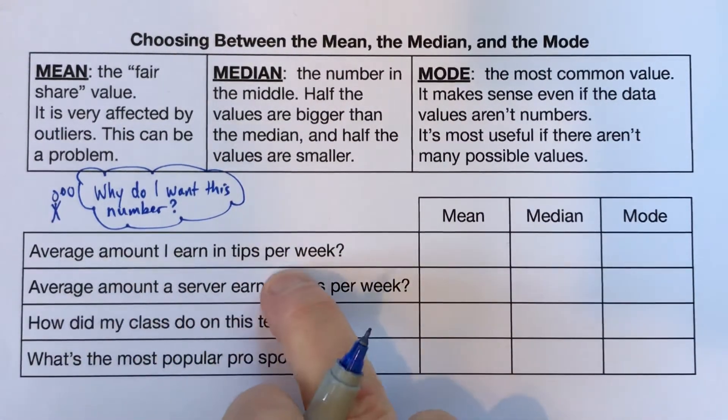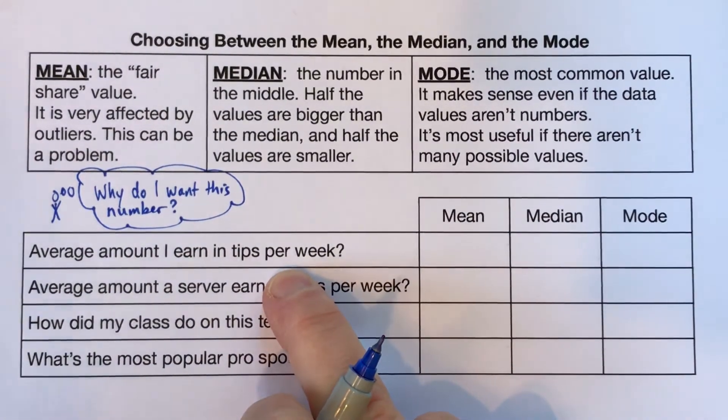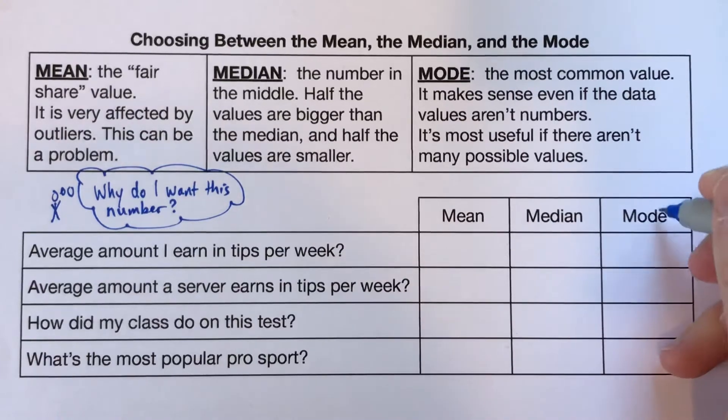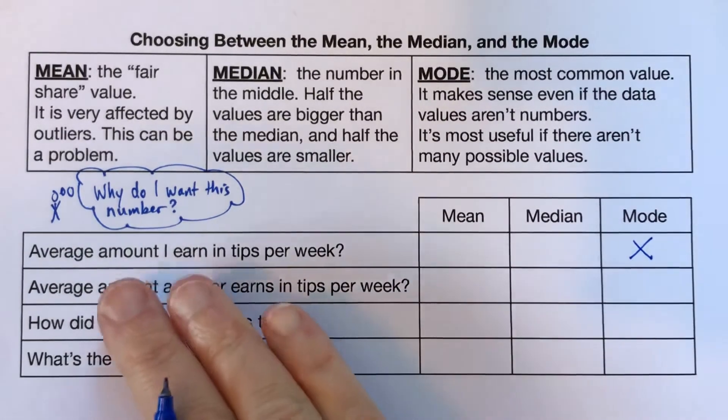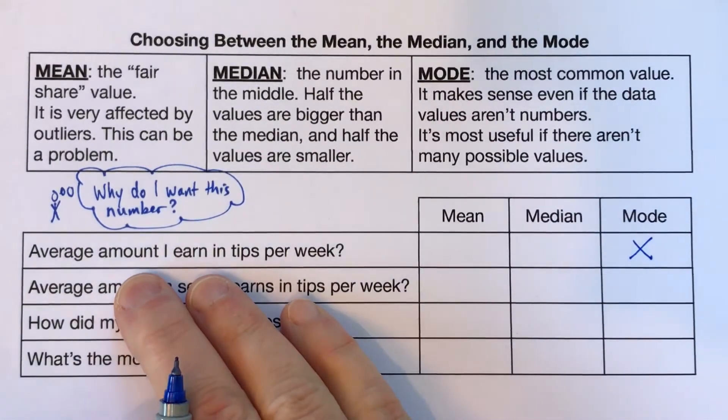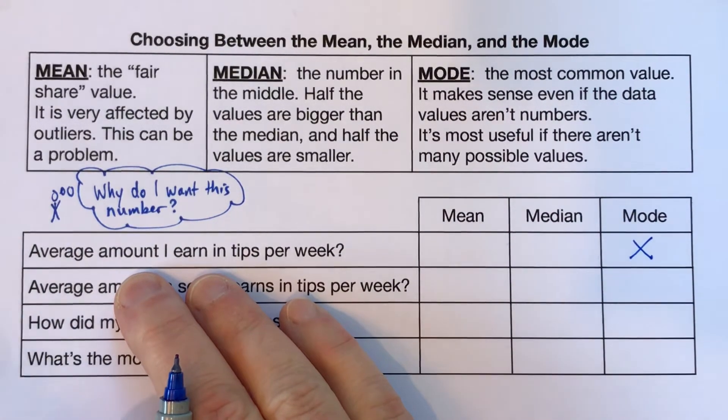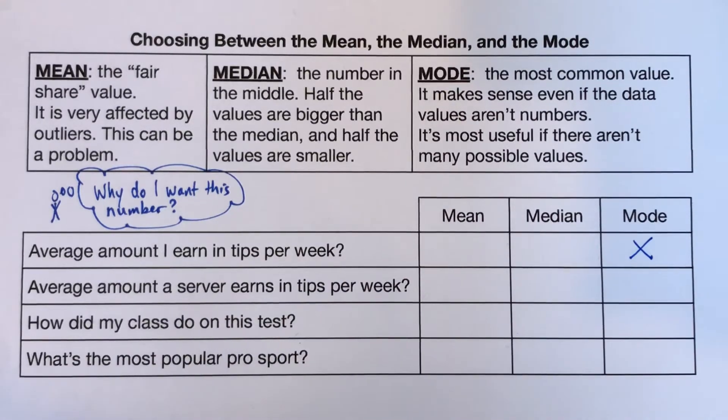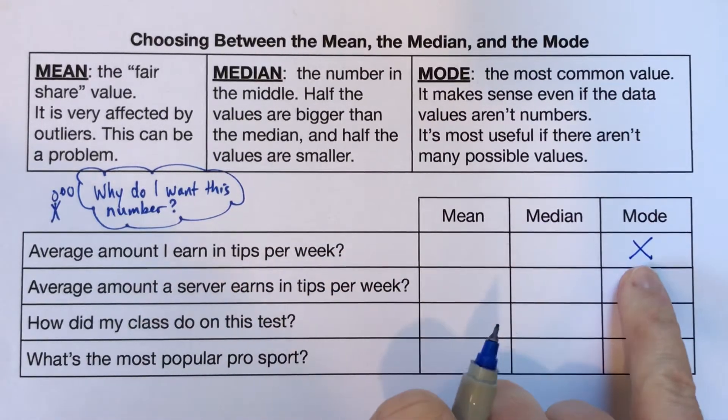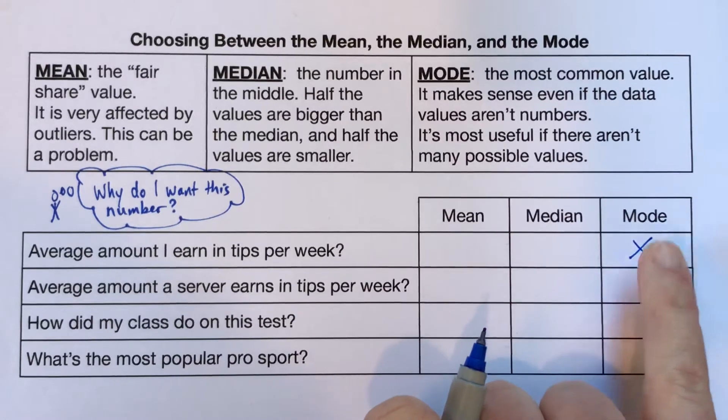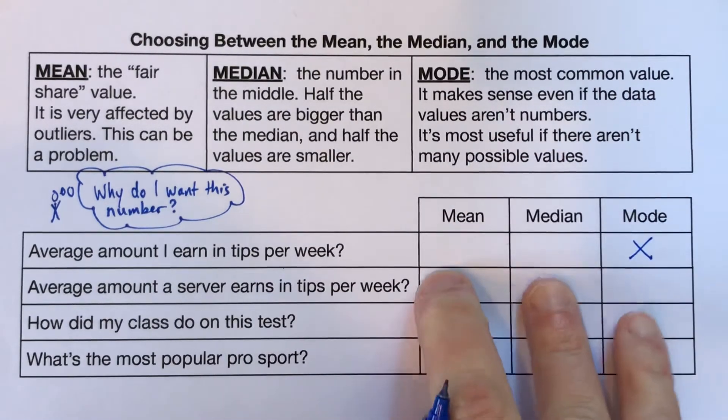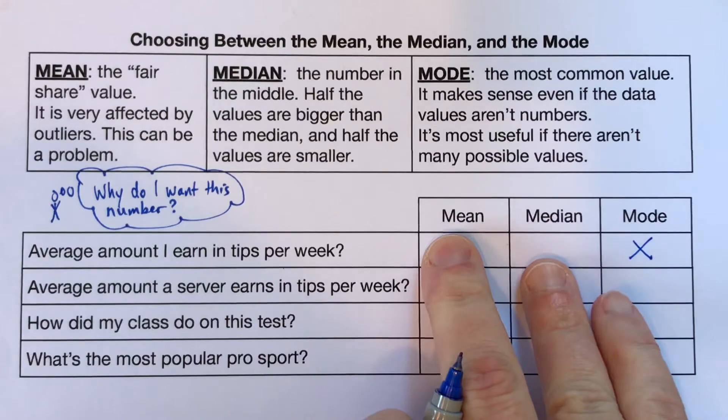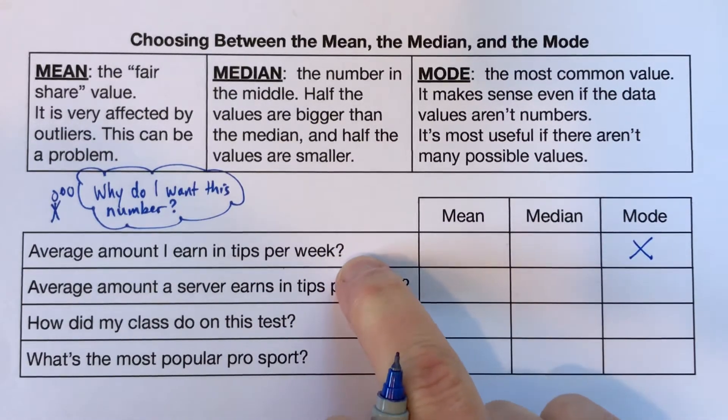So the first example here is the average amount I earn in tips per week. I'm going to start with the mode, actually. I'm going to say that the mode is not a very good measure of average here. The amount I earn in tips per week, say I'm a server at a restaurant, especially if I'm being really precise with my numbers. If one week I earn $125.37, is it really meaningful if a few weeks later I also earn $125.37? I don't think that's particularly important, because there's so many different possibilities for how much I could earn.